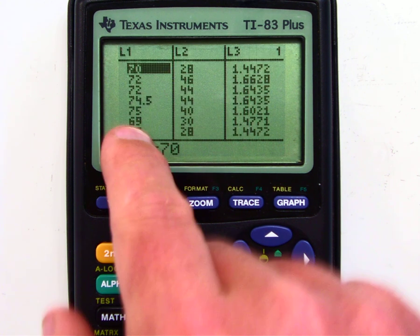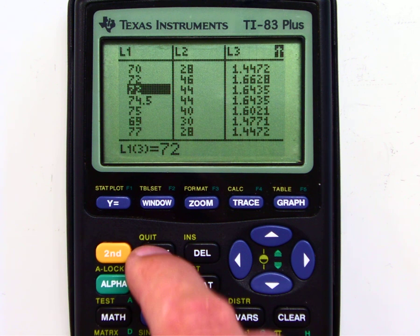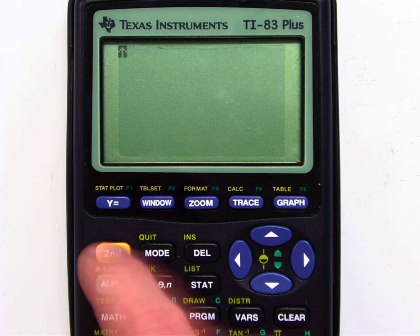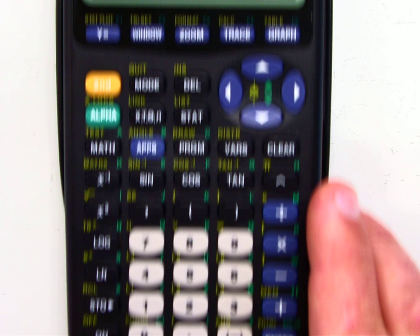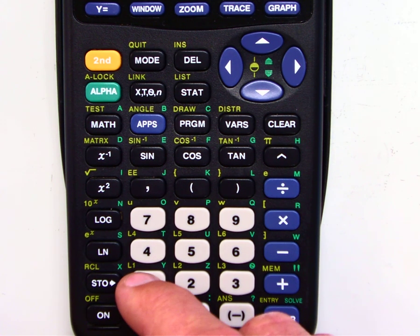Another way to access that list, if I go to quit again, if I just hit second, L1, which is above one, second, L1.